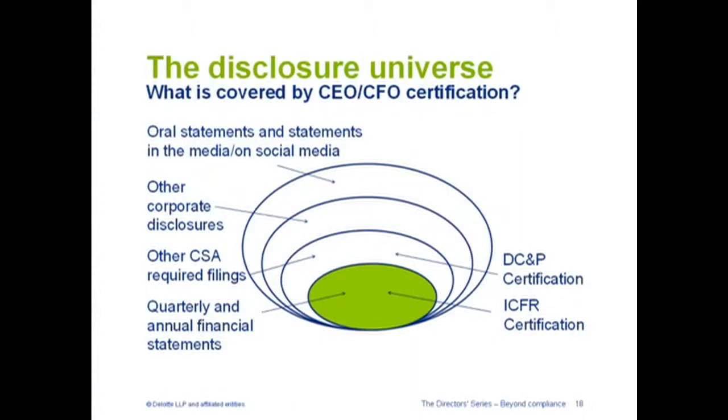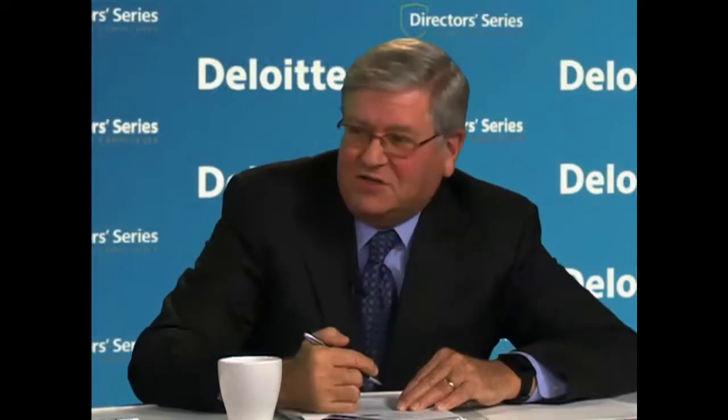Given that profile, the question that boards and audit committees need to ask is: what information in that disclosure universe moves the market? That ties back to questions about non-GAAP measures. And do we have the control structure matched up against the disclosure universe and the key information that moves the market? On the right-hand side of the chart you can see two levels of control: ICFR — internal control over financial reporting — which covers the financial statements, and disclosure controls, which cover the information required to be disclosed.